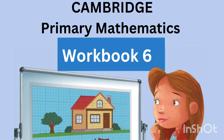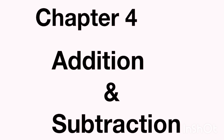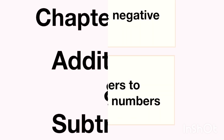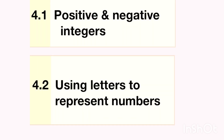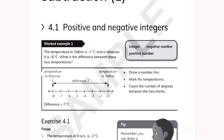Welcome back to another class of Cambridge Primary Maths Workbook 6. Today we are going to understand Chapter 4, addition and subtraction. In this video we will solve 4.1 and 4.2. Let's begin with exercise 4.1: positive and negative integers.